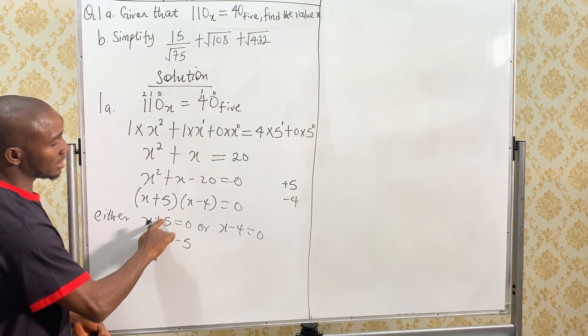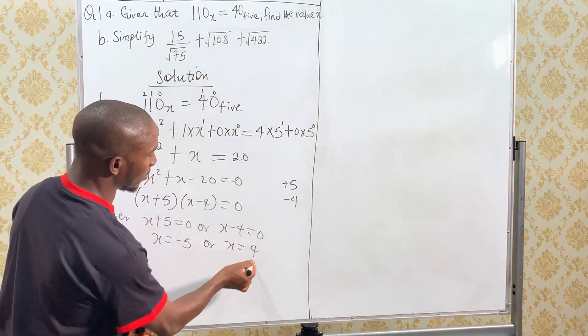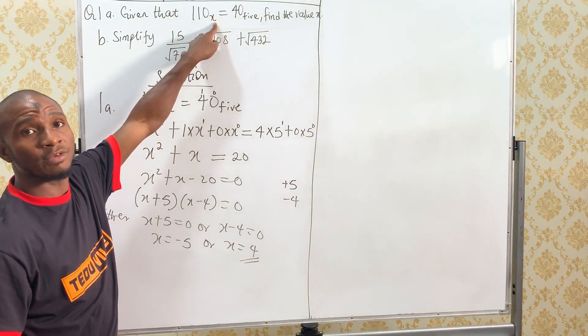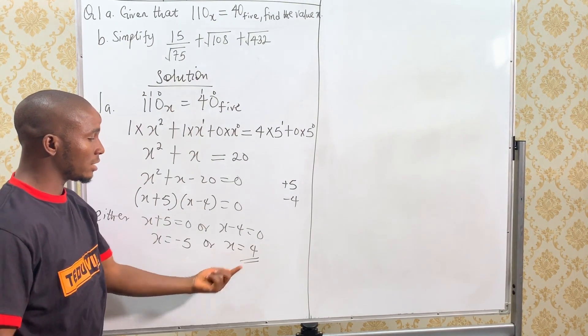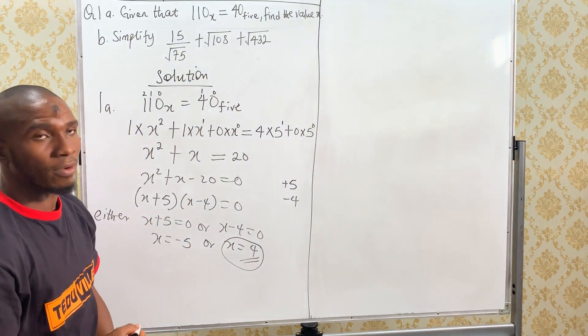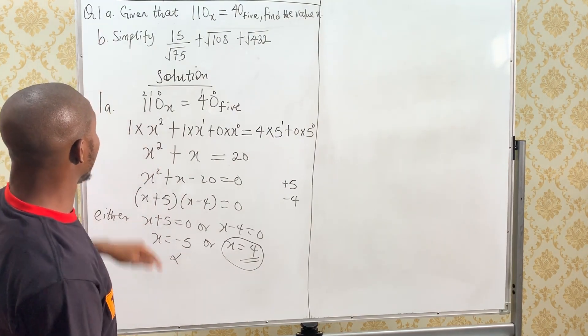X becomes minus 5. This plus 5, when it comes to this side, it becomes minus. Or, X equals to 4. But, X cannot be negative because X is in form of a base. So, X is 4. The value of X is 4. X cannot be minus 5. That is question 1A.